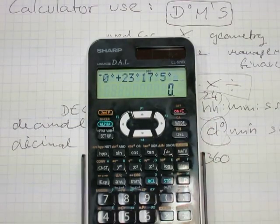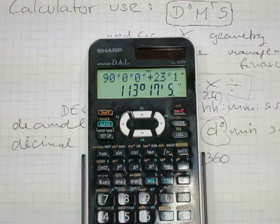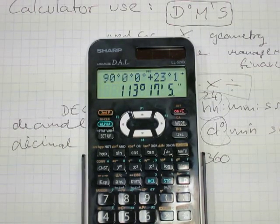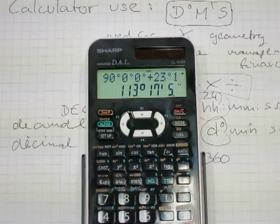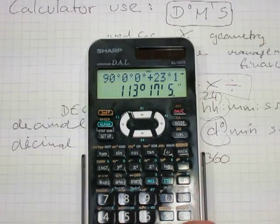And you have a grand total of 113 degrees, 17 minutes, and 5 seconds. Now if you want to know what the third angle in the triangle is, you can just subtract all of this from 180.